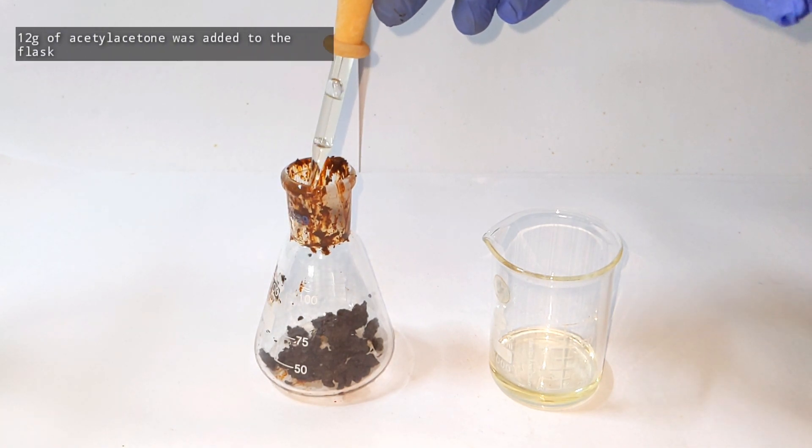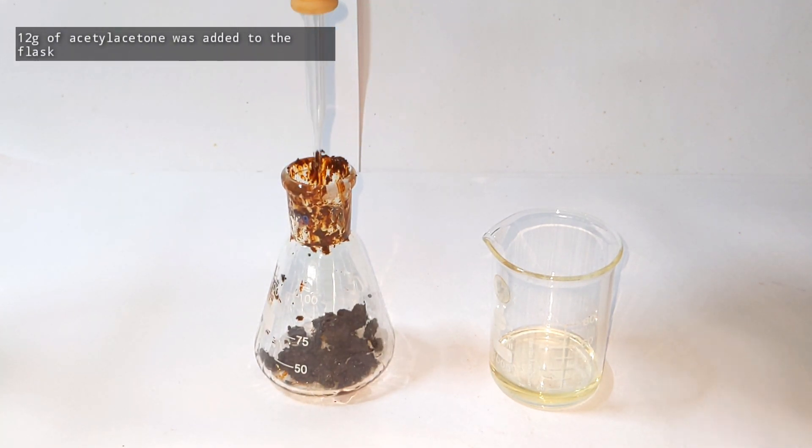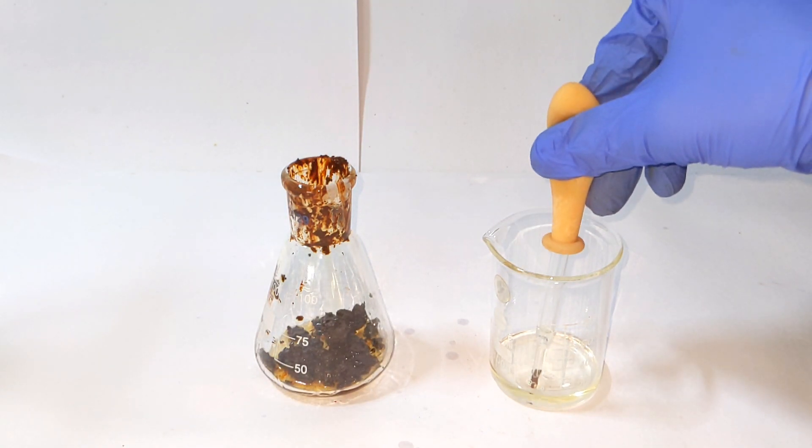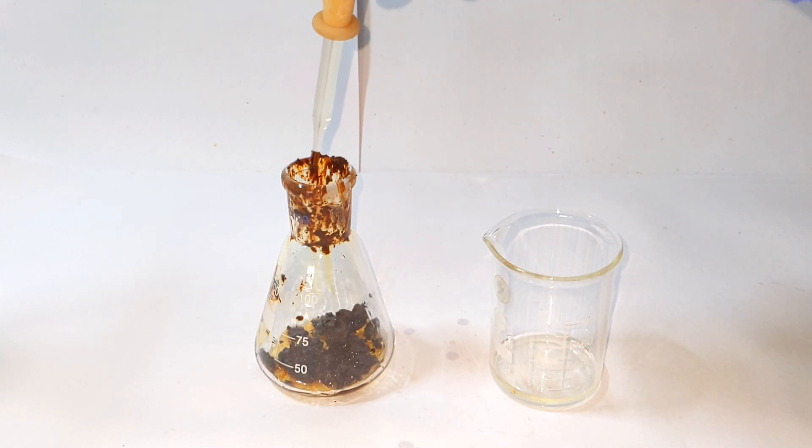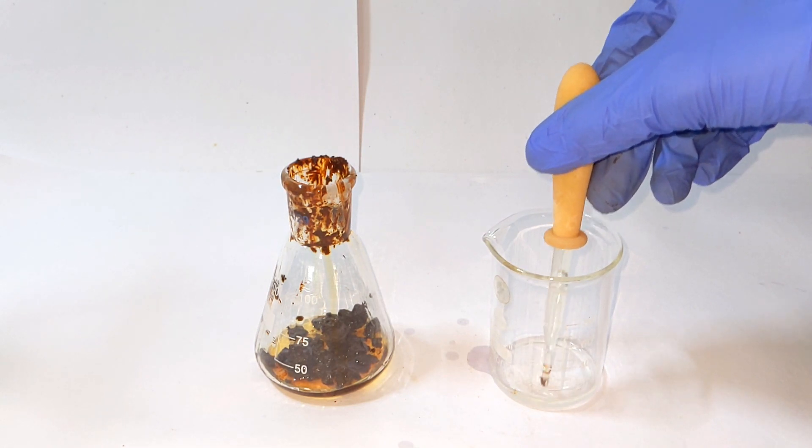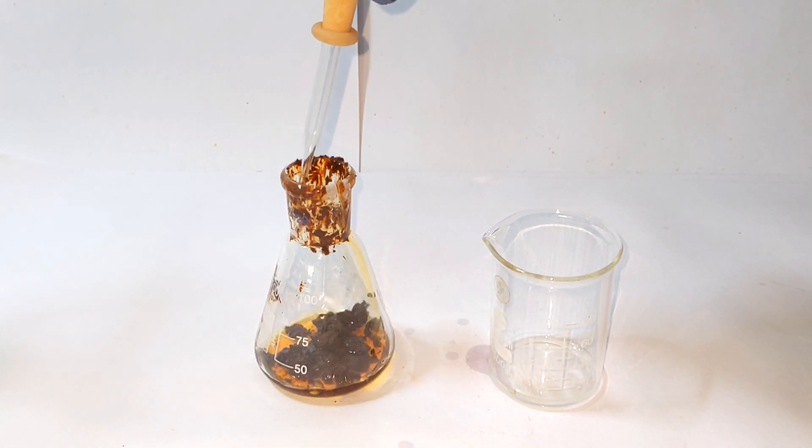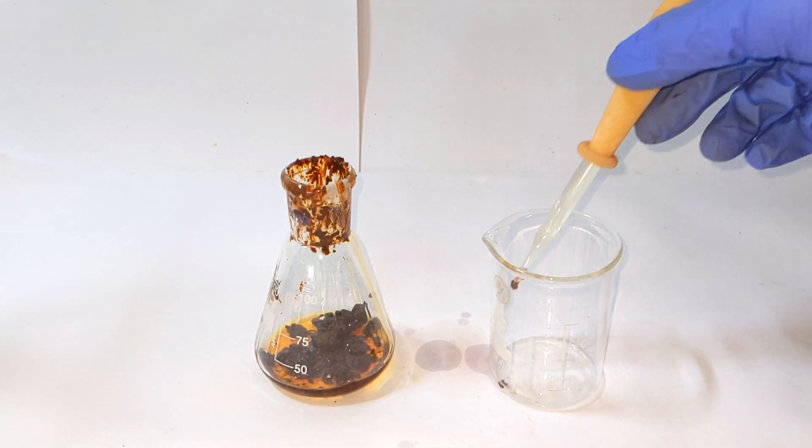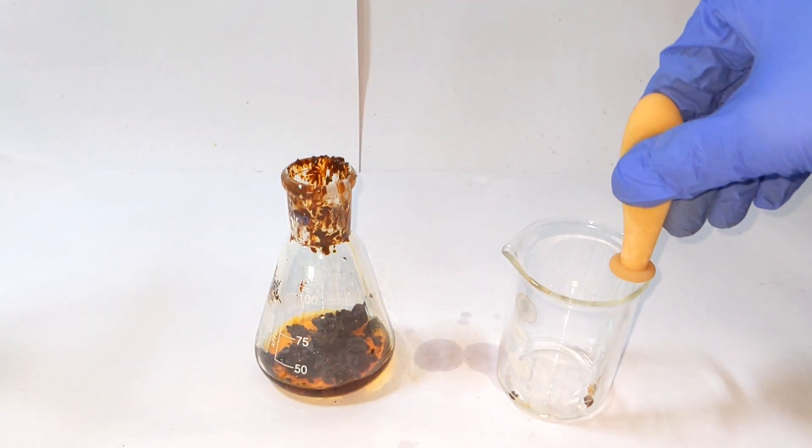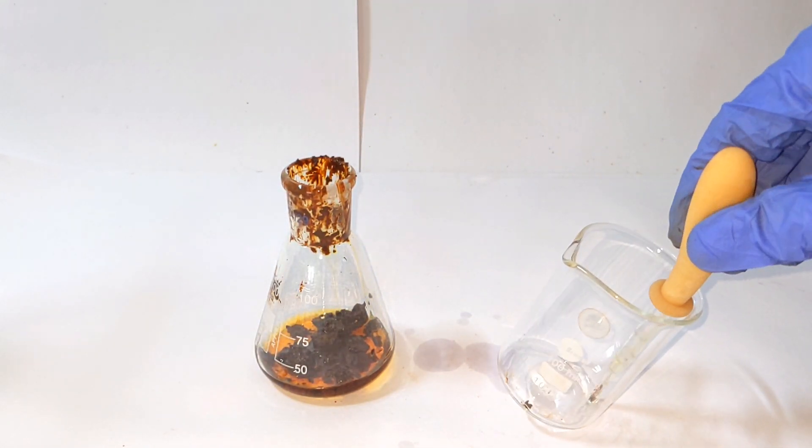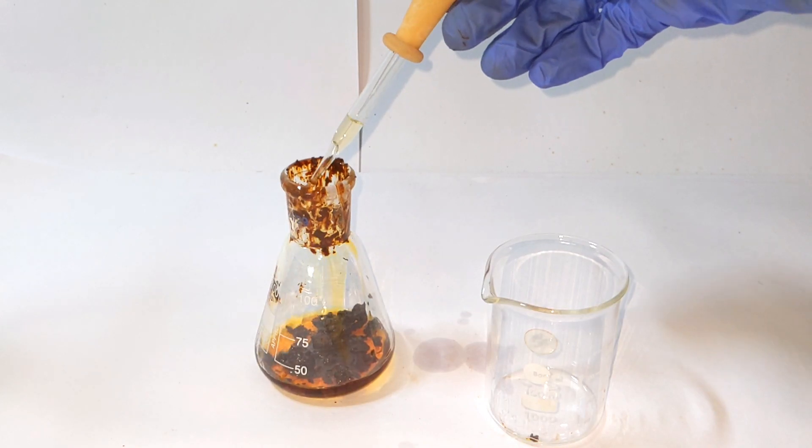Once everything is transferred to the flask, 12 grams of acetylacetone was added to the flask. This was added using a glass dropper and the walls of the flask were washed along with the addition of acetylacetone to take down as much of the iron(III) hydroxide that is stuck on to the neck of the Erlenmeyer flask.